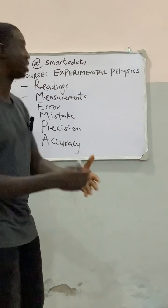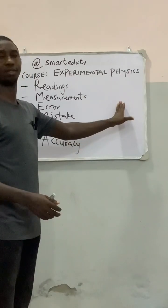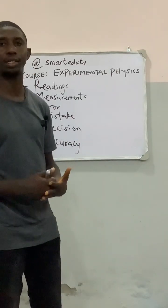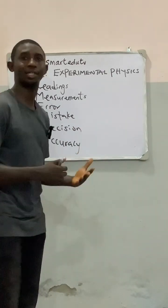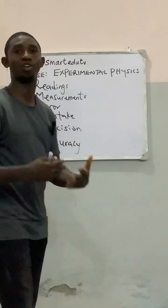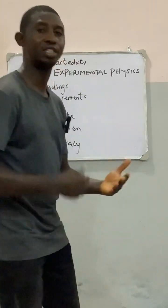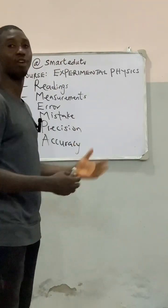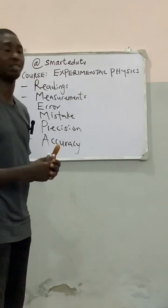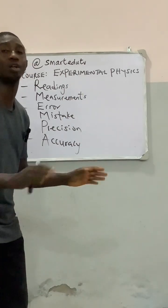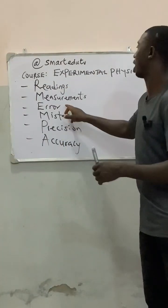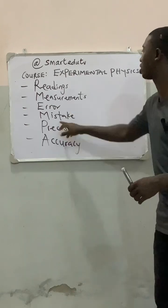The next we are going to look at is mistake. What is a mistake? A mistake is the total deviation from the actual theory of an experiment. In experimental physics, mistake is not allowed. Error is allowed in experimental physics, but a mistake is not allowed.